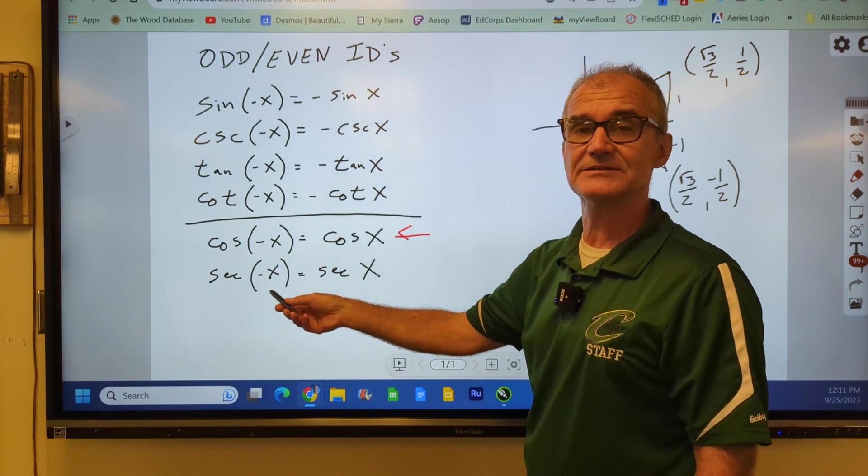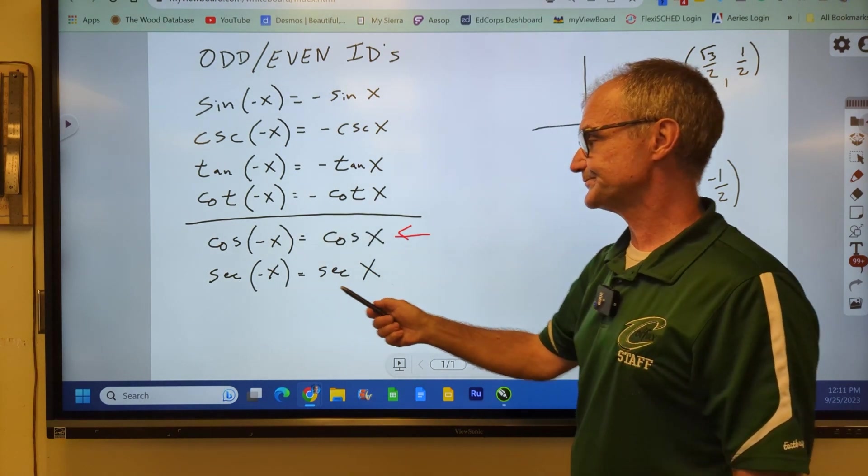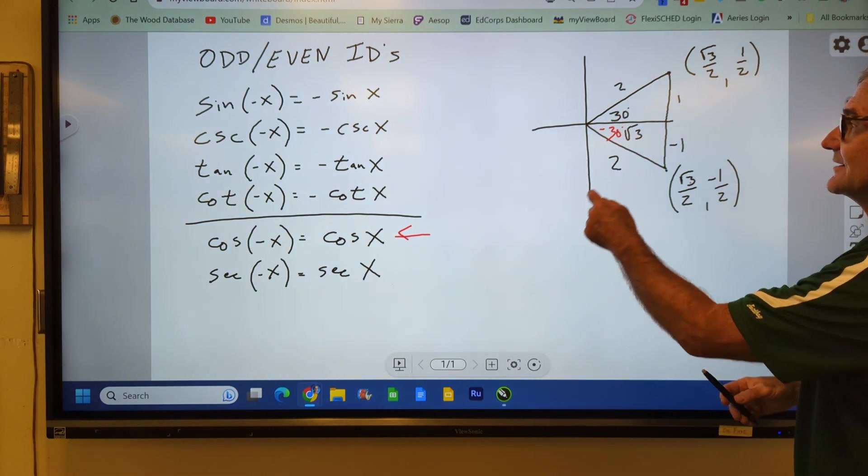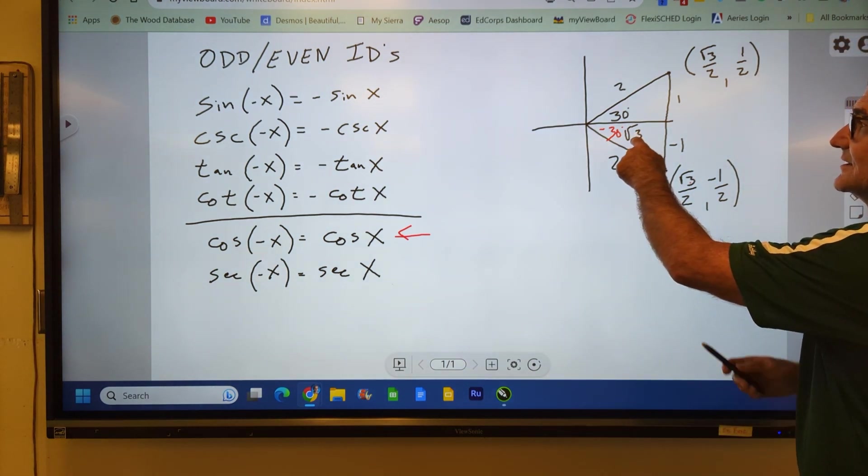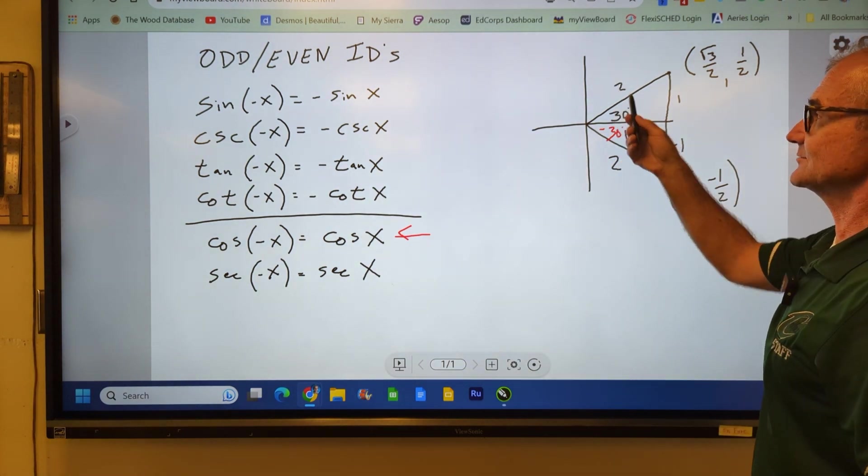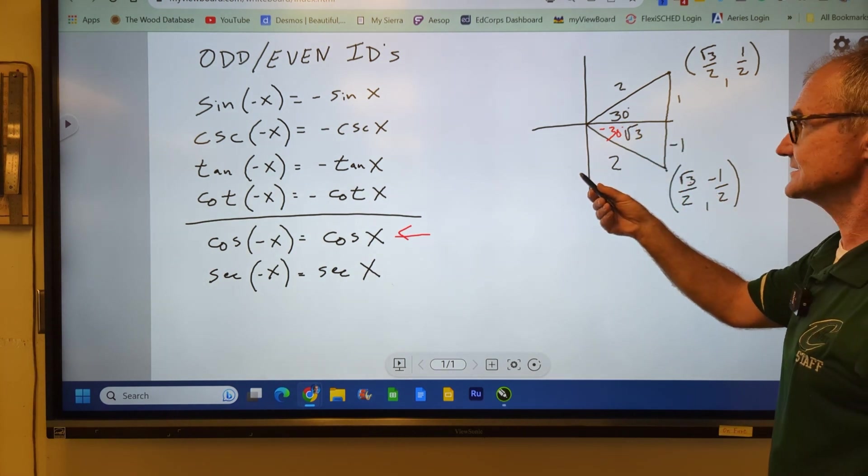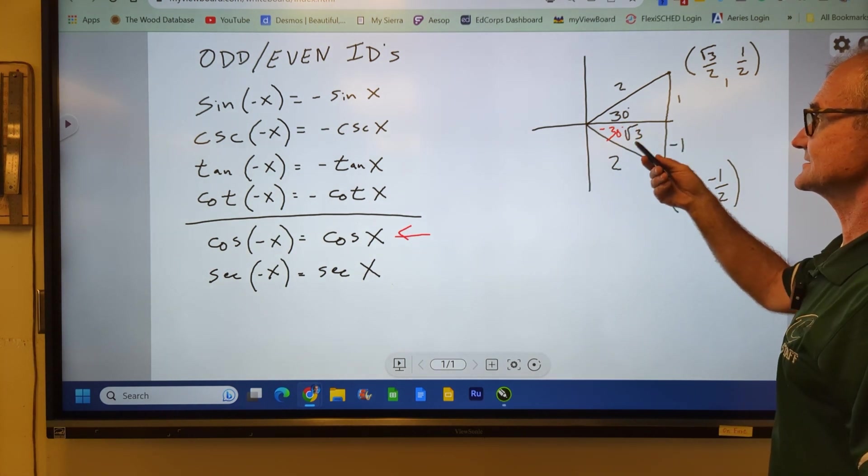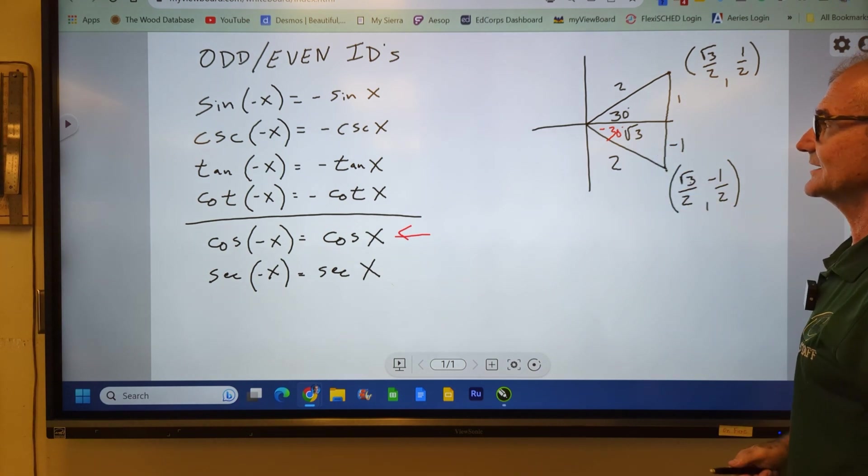The other even identity, secant of negative x, that will also hold true. The secant is now hypotenuse over adjacent. Whether I'm in a positive angle of rotation or a negative angle of rotation, my ratios are going to stay the same, because my adjacent is going to be positive.